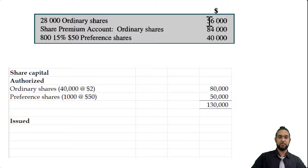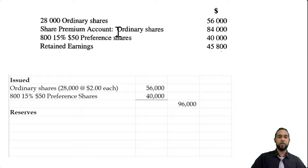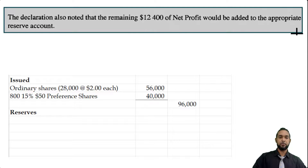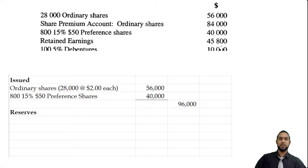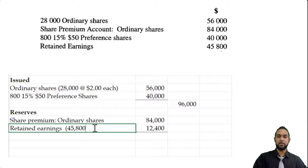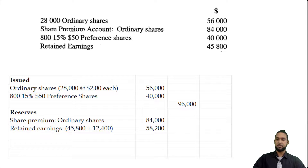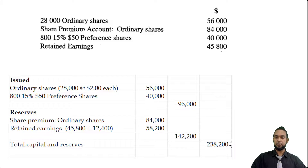For issued share capital, the question tells us we have 28,000 ordinary shares at $56,000 and 800 preference shares at $40,000, giving us $96,000 for issued share capital. Then we have the reserves: the share premium account of $84,000 is a reserve, as is retained earnings. The retained earnings opening balance was $45,800, and the $12,400 from this year's net profit is added to it, giving $58,200 in retained earnings. Adding the share premium and retained earnings to the issued share capital gives us $238,200 for total capital and reserves.